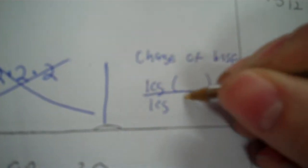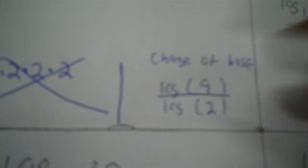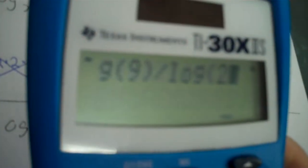Now then you use your change of base formula. Make a division line and you put log, log, and then parentheses. Now you got to get this right here. The base 2 goes on the bottom. Now the product you're trying to multiply to goes on top. So you take log 9 divided by log 2. 3.17.